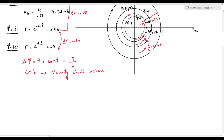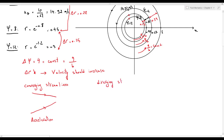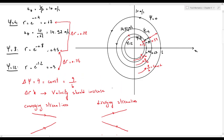If we see two streamlines getting closer to each other, that means the velocity in the flow field is increasing. Converging streamlines indicate acceleration in the flow field, while diverging streamlines — like a diffuser — indicate deceleration and decreasing velocity. This is confirmed in our example: uθ increased from 10 m/s to 14 m/s as the streamlines converged toward the origin.